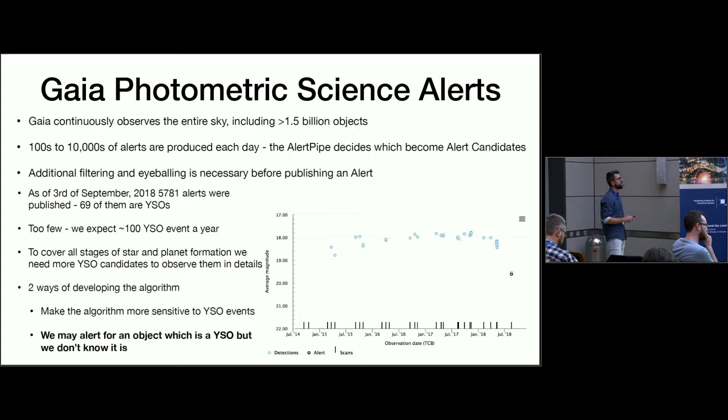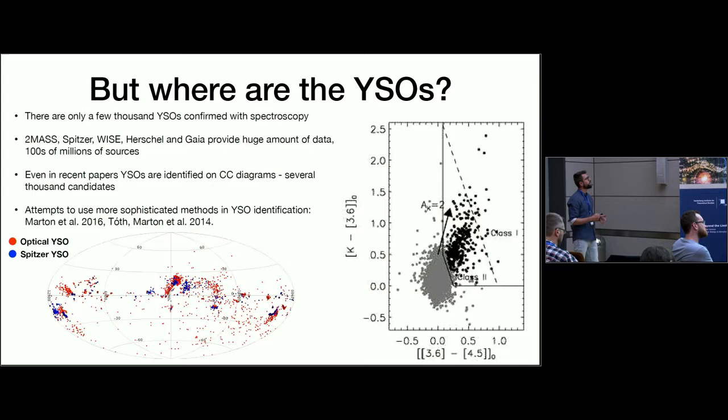There are two ways of developing this algorithm. The first one is that we make it more sensitive to the YSO events. YSOs can produce not just dimmings but brightenings and so on, they are very difficult beasts. The other way is that we may have already alerted for a YSO but we don't know that it is a YSO, so we have to figure it out.